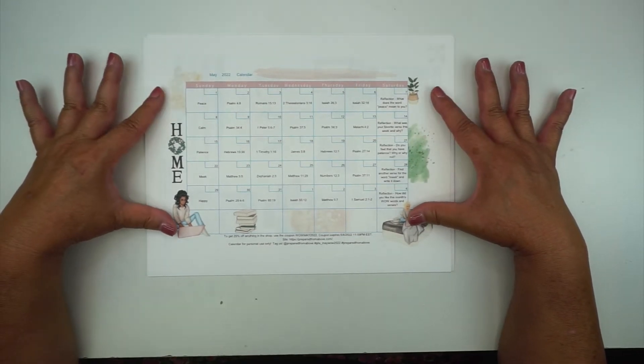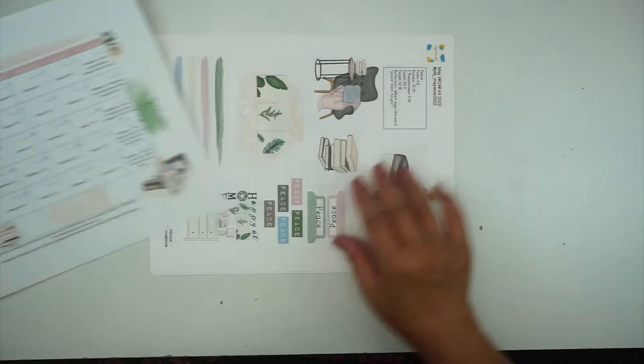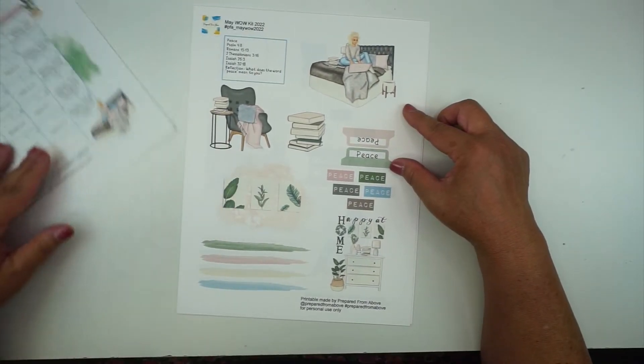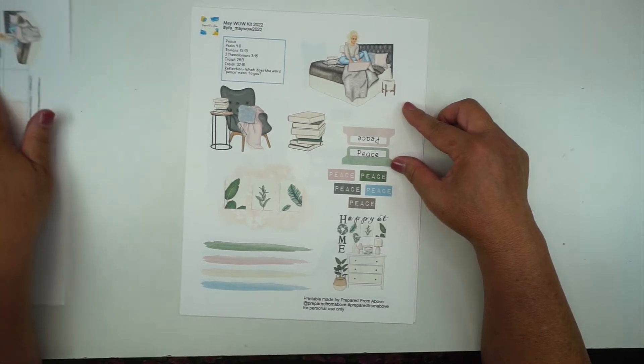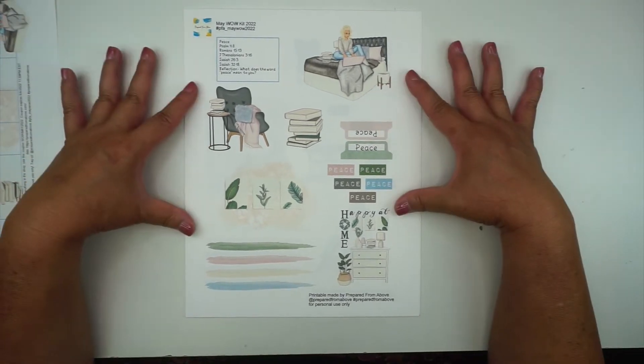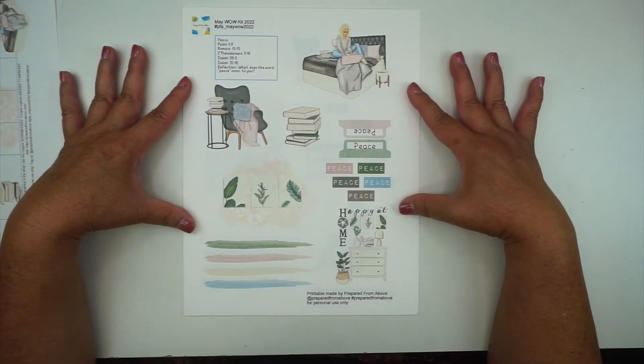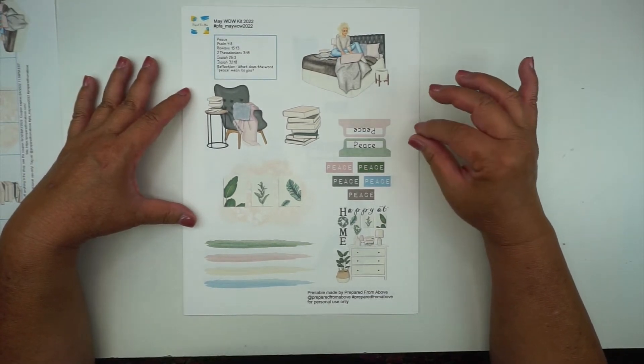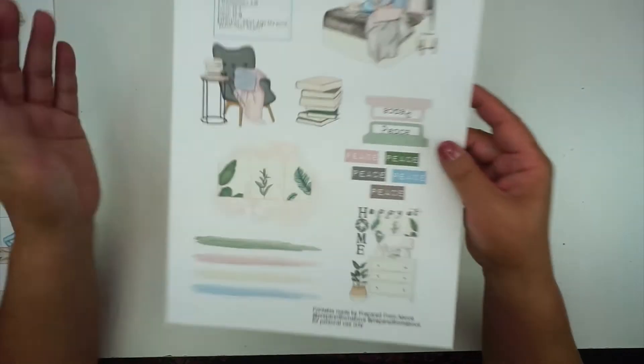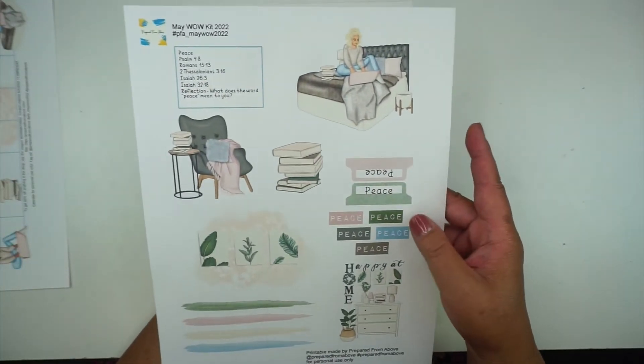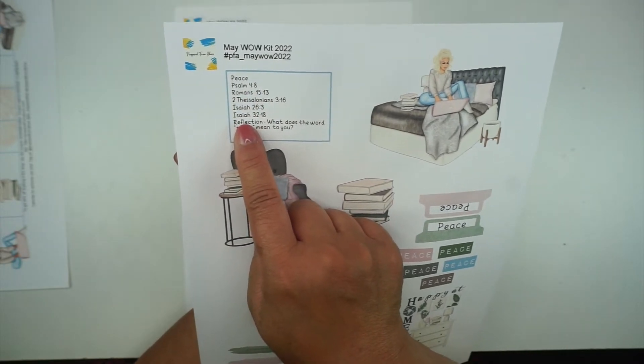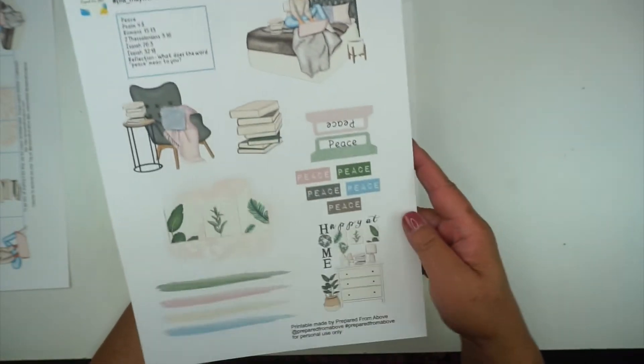In addition to this freebie calendar, if you would like to, you can purchase the ephemera kit that goes with these verses. What you'll get is one page of ephemera per word. So for example, this one is peace. This is the page you'll get for peace and you'll have your word up here and then you'll have your five scripture verses and then you'll have your reflection question.